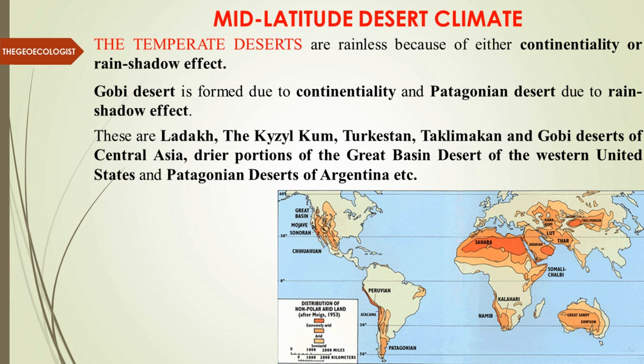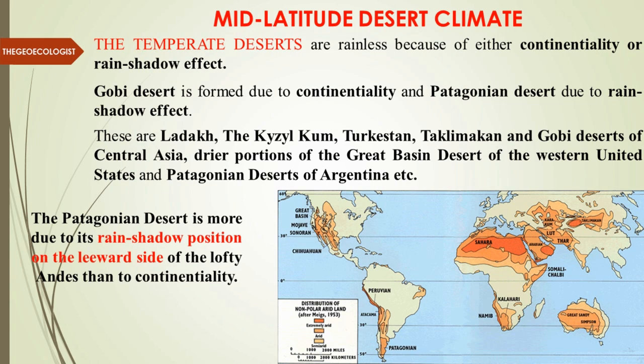Other mid-latitude deserts include Ladakh — a cold desert in India — Kizilkum, Turkistan, Taklimakan in Central Asia, the Great Basin Desert of western United States, and the Patagonia Desert of Argentina. Patagonia is specifically due to its rain shadow position on the leeward side of the lofty Andes.